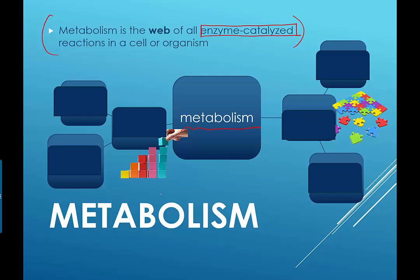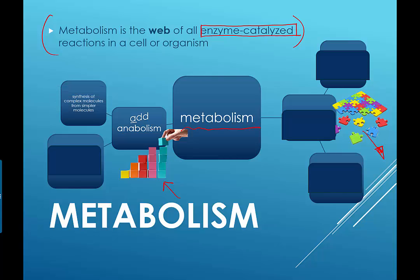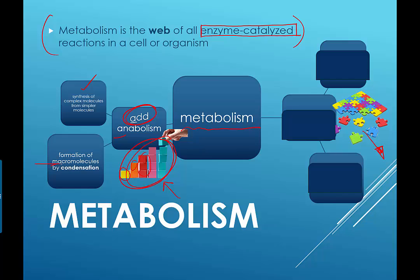Metabolism can be split into two types. First, we have anabolism. If you think of 'A' meaning 'add,' anabolism is about adding smaller bits together to make larger molecules. Anytime we're synthesizing complex molecules from simpler molecules, we call that anabolism — it's building up molecules, forming large molecules. Another fancy word for large is 'macro,' so a large molecule is a macromolecule, formed by a process called condensation.